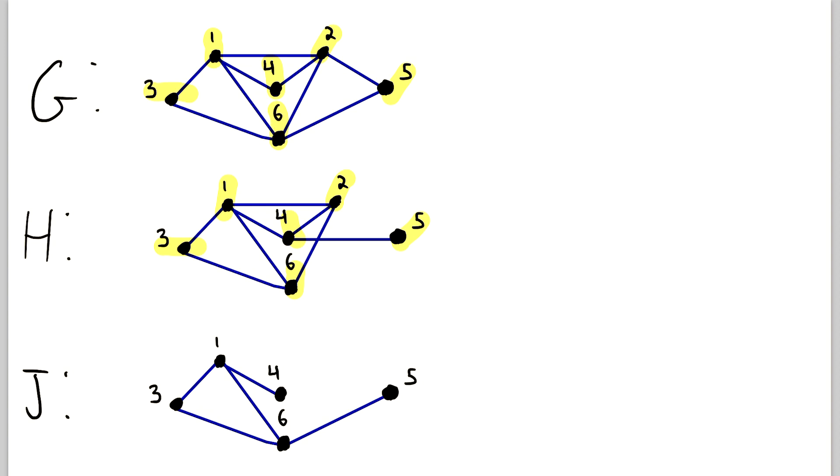So then we'll move on to the edges. And I'll highlight the edges in green. So we see that 1 and 2 are joined in H. They're also joined in G. 1 and 4 are joined in H. They're also joined in G. 2 and 4 are joined in H. They're also joined in G. 4 and 5 are joined in H. And we see that 4 and 5 are not joined in G.